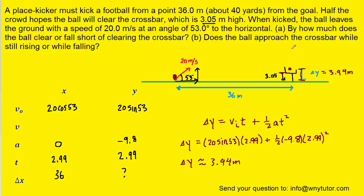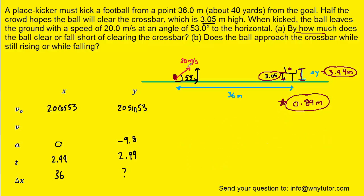And when it says by how much, we simply have to subtract this height from the height of the goal post. And when we do that subtraction, we get an answer of approximately 0.89 meters. So that is indeed the correct answer to part A.